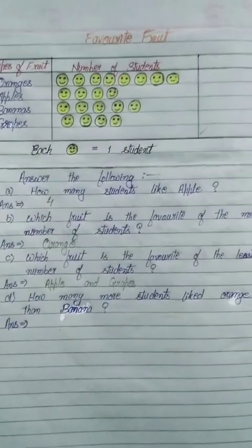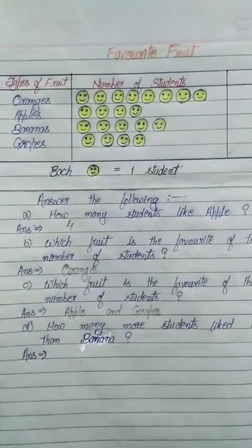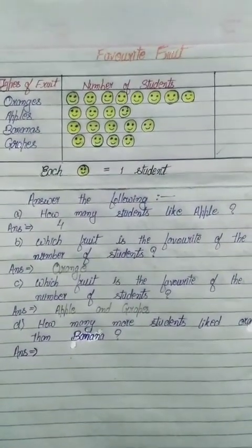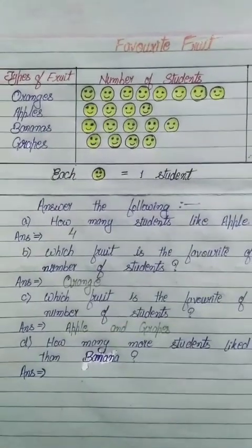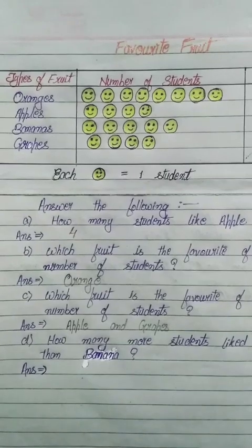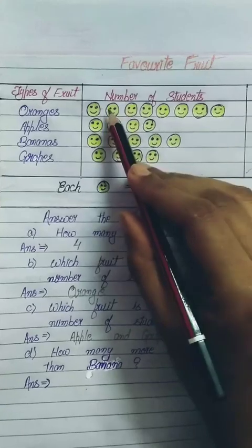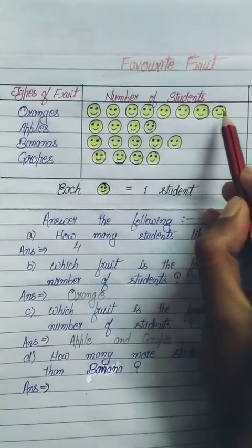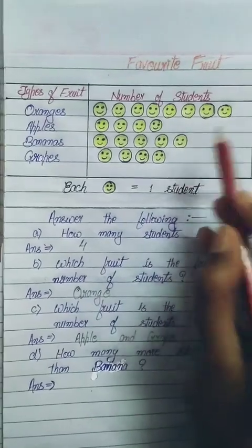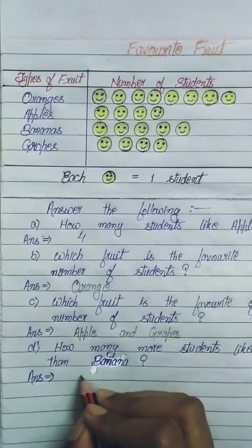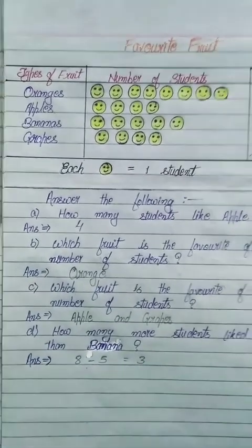Question D: how many more students liked orange than banana? To find this we subtract: eight students liked orange and five students liked banana, so eight minus five equals three. Three more students liked orange than banana.